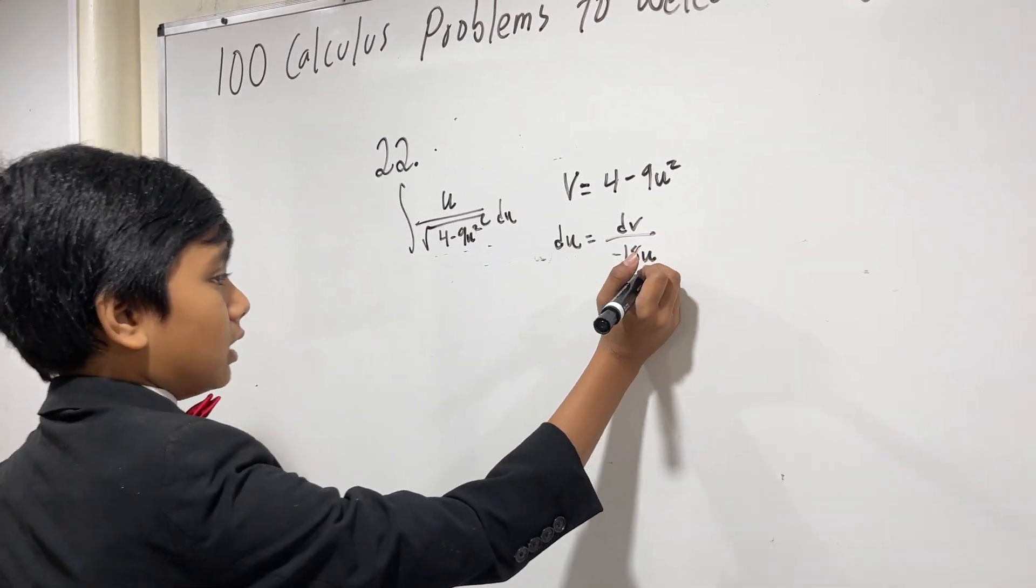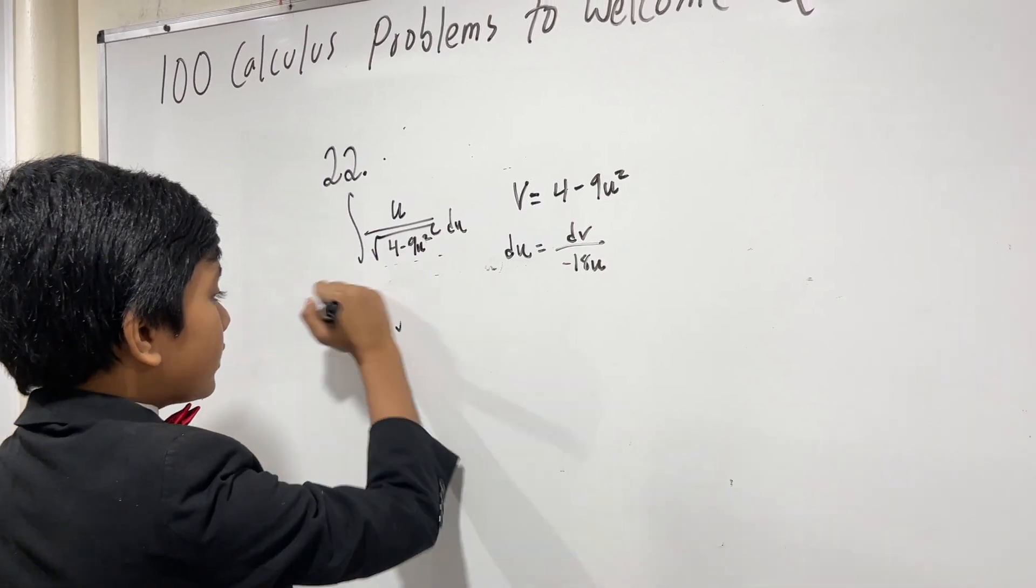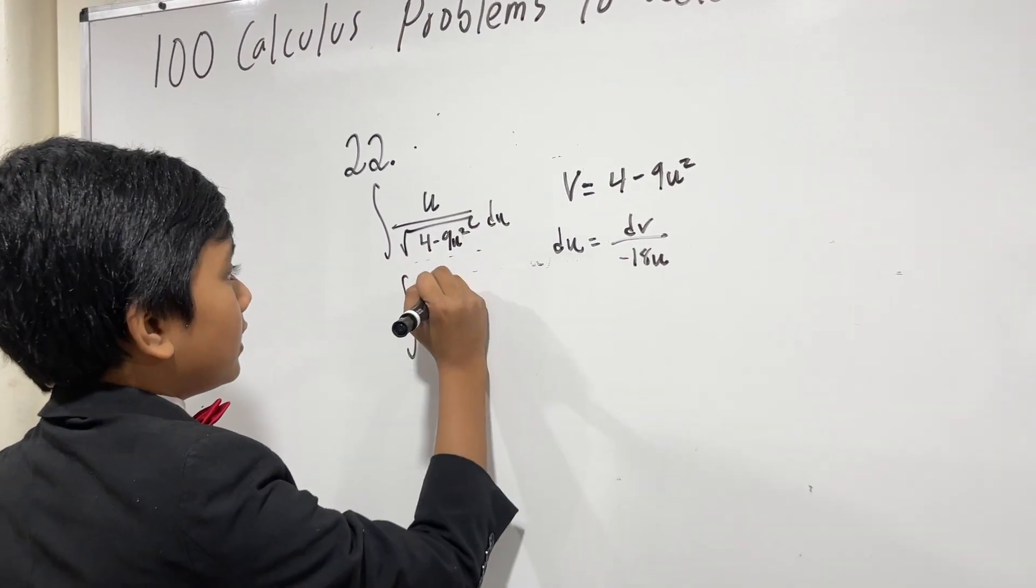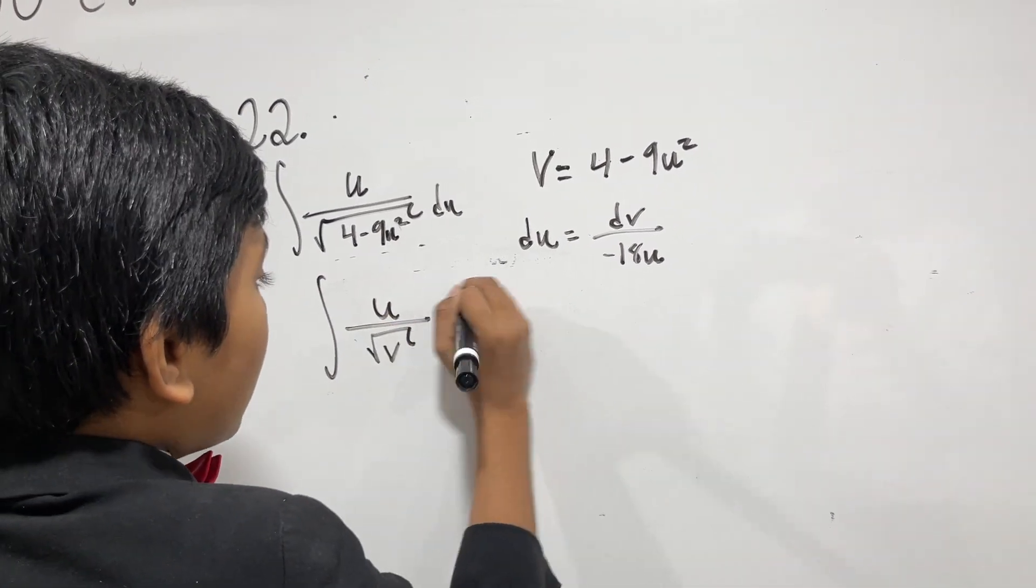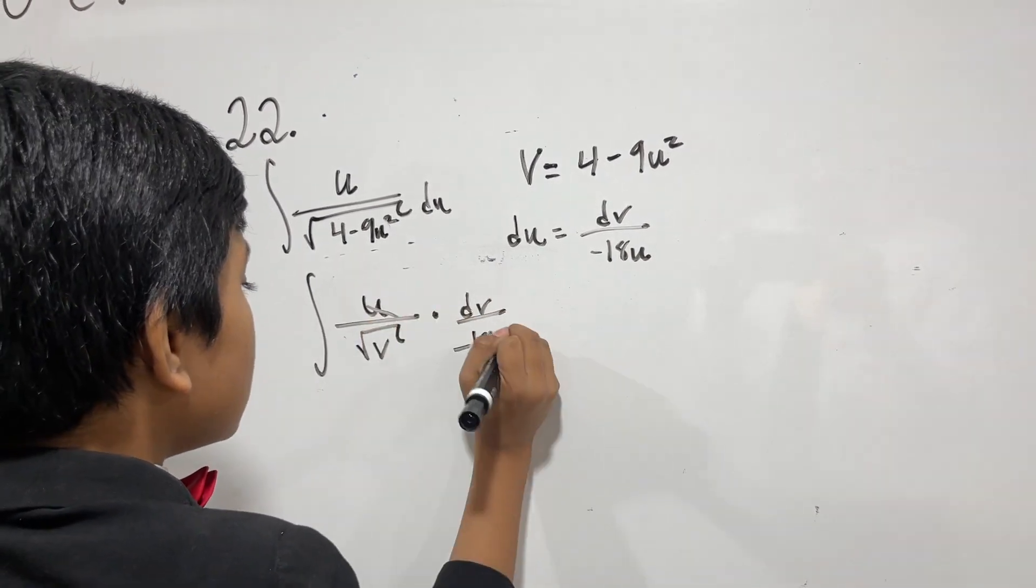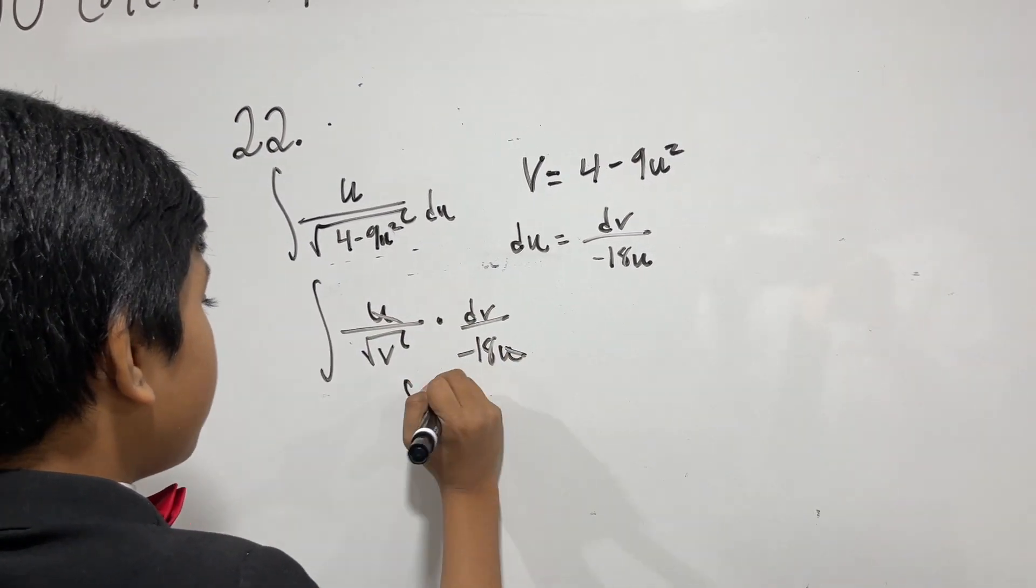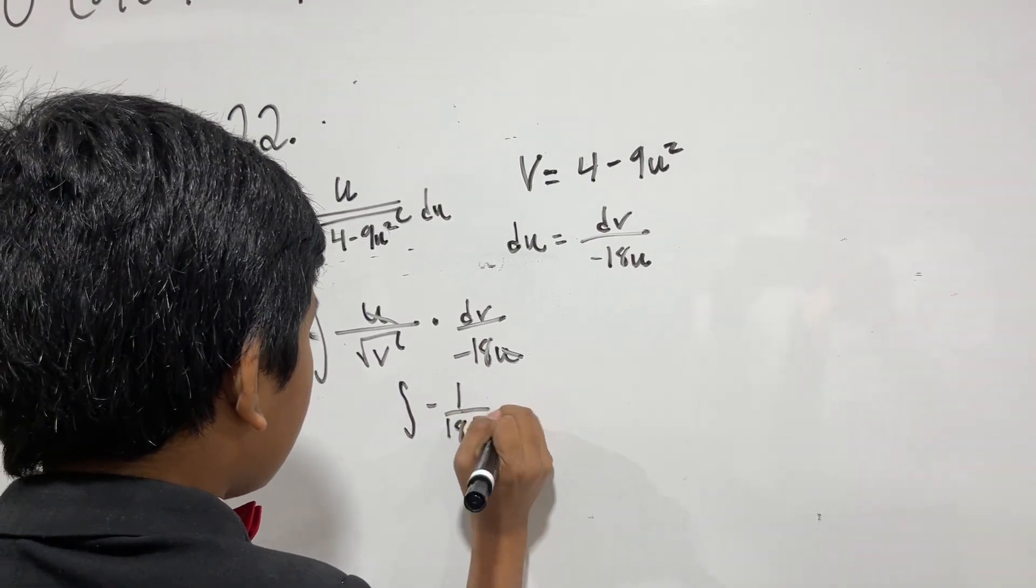Now we take that and we put that over here, and we get the integral of u over the square root of v times dv over minus 18u. So, you get the integral of minus 1 over 18 root v dv.